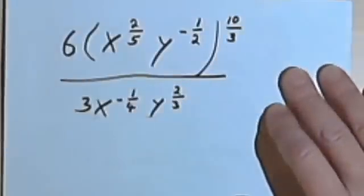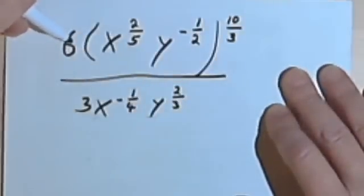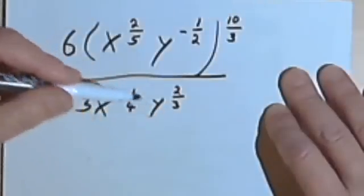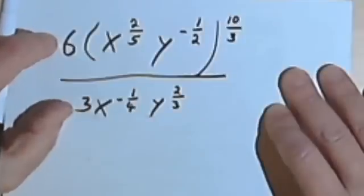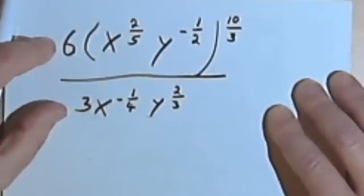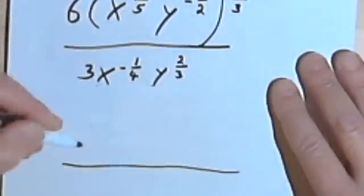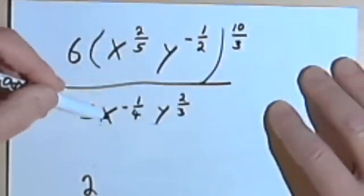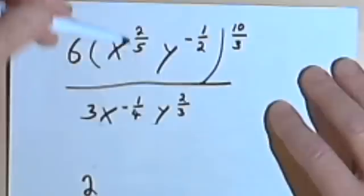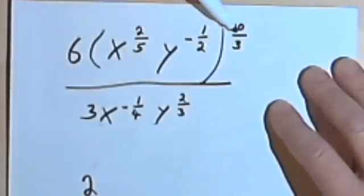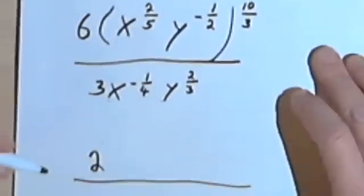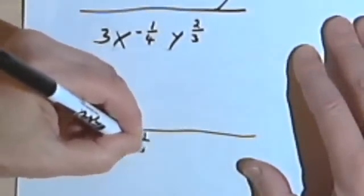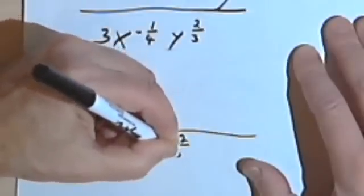The first thing I see is I've got this 6, and the 6 is multiplying everything in the numerator. And I've got a 3 in the denominator that multiplies everything in the denominator. So I can isolate the 6 and the 3 and simplify that part of the fraction. 6 over 3 is just going to be 2. So I'm going to have a new fraction starting with 2, and I'll rewrite the denominator as x to the negative 1/4 times y to the 2/3.